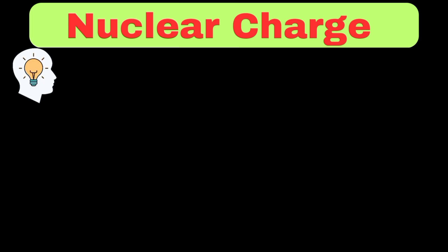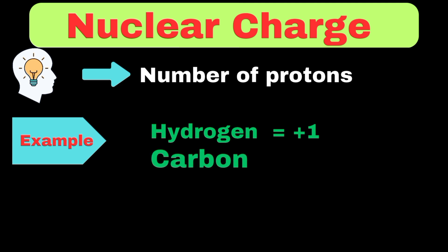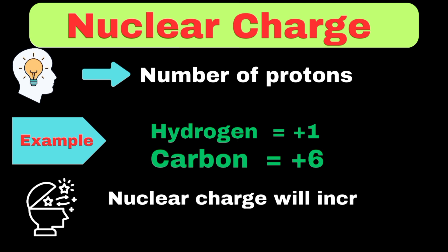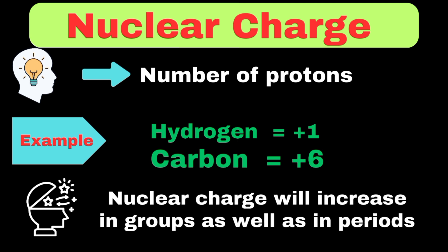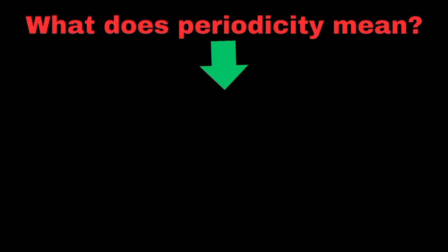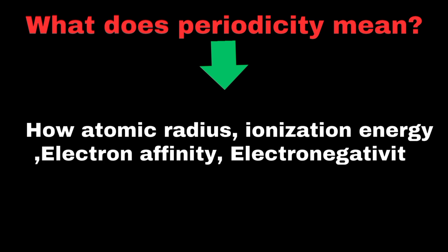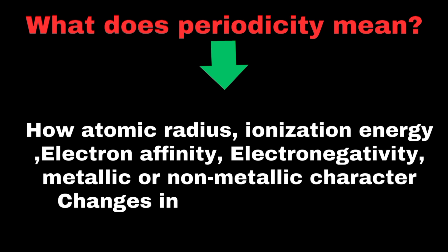Now we can understand what nuclear charge refers to in the periodicity of properties. Simply, nuclear charge means the number of protons in the nucleus of a particular element. For example, the nuclear charge of hydrogen is +1, which shows it has 1 proton, and the nuclear charge of carbon is +6, since it has 6 protons. One thing to keep in mind is that nuclear charge will always increase whether we move in groups or periods, because elements are arranged based on ascending atomic numbers. Periodicity explains how atomic radius, ionization energy, electron affinity, electronegativity, and metallic or non-metallic character change in groups and periods.